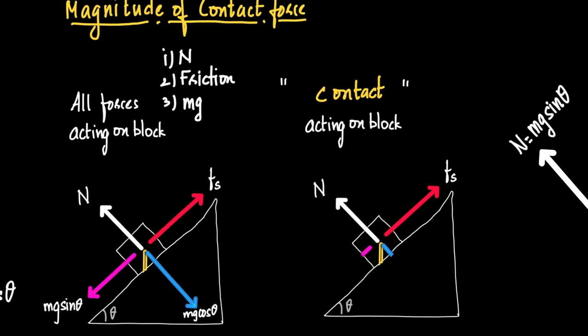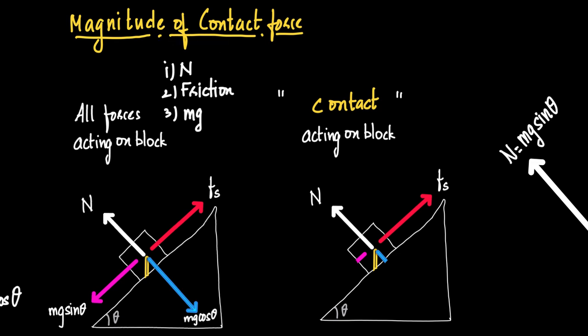Now here comes the concept. The question asks for the magnitude of the contact force. Out of the three forces acting on the block, how many are contact forces? Normal reaction — yes, it is a contact force because it arises from two surfaces being in contact. Friction — we know friction acts between two bodies in contact. But weight is not a contact force.